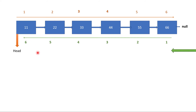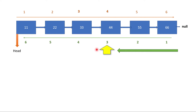We have to find the third node from behind. The third node from behind is actually the fourth node from the front. In the same logic, the second node from behind is actually the fifth node from the beginning.